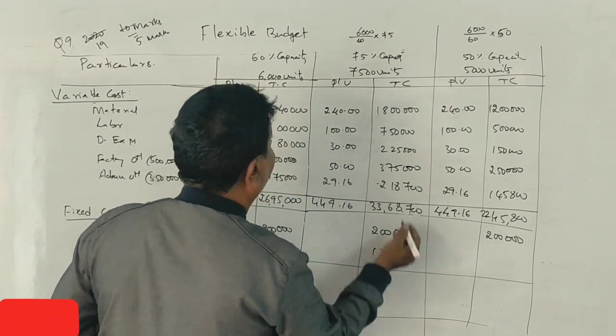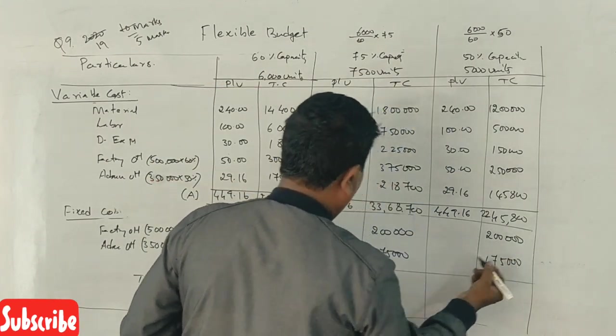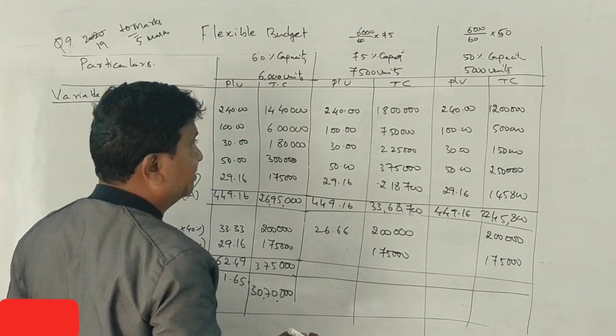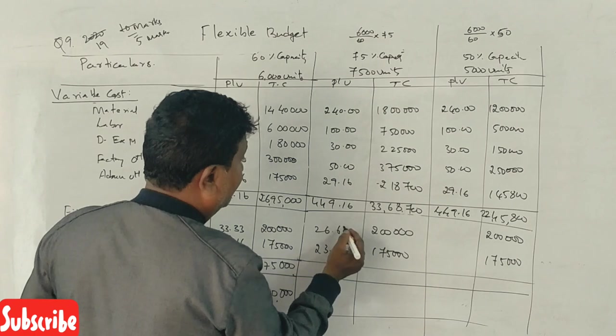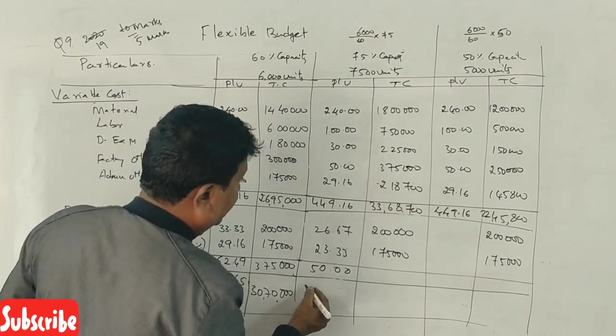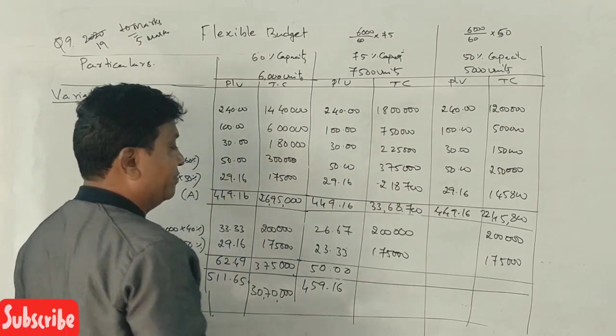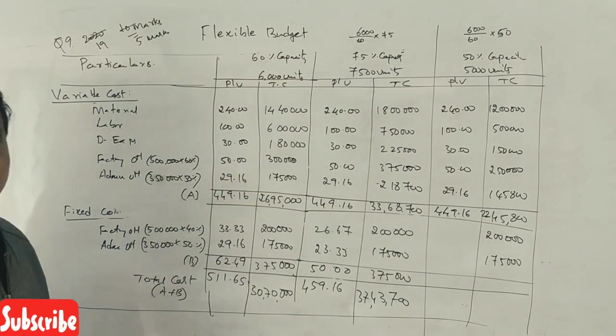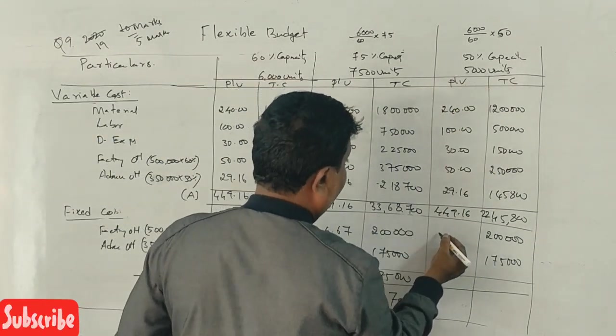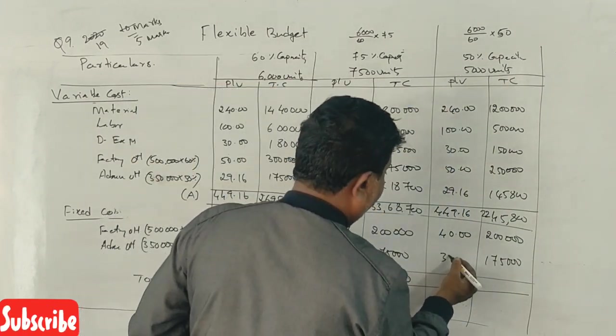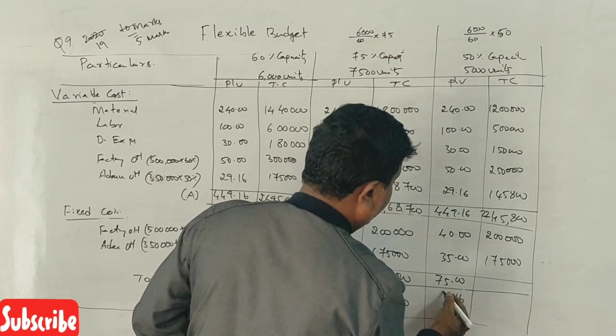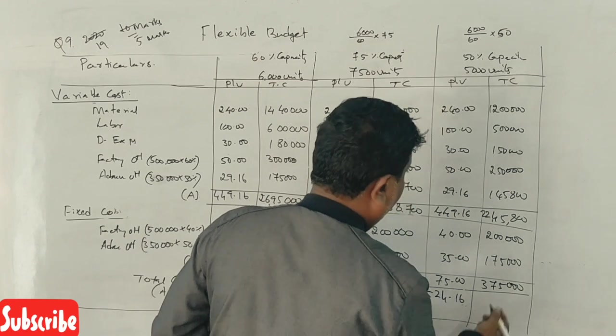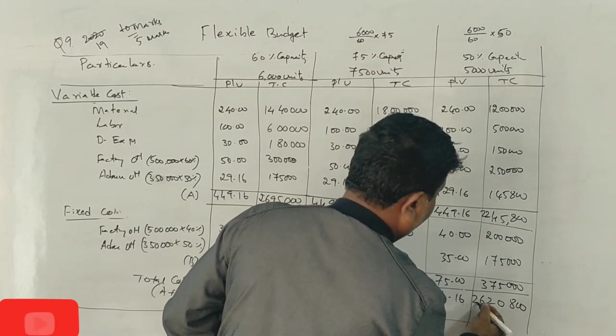Fixed costs: 2 lakhs divided by 7,500 equals 26.66 per unit. 1 lakh 75,000 divided by 7,500 equals 23.33 per unit. Total fixed cost 3 lakhs 75,000. Grand total with variable cost gives final amounts.